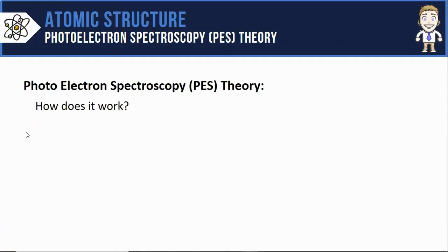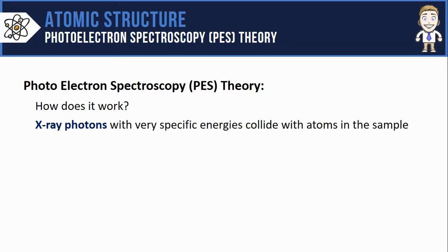So let's explain some of the theory that goes on behind the scenes with PES in order to understand how it works. The first thing my photoelectron spectrometer is going to do is generate some extremely high-energy x-ray photons, and it's going to do it in such a way that it knows the exact energy of each of these photons, and it's going to collide them with the atoms in the sample.